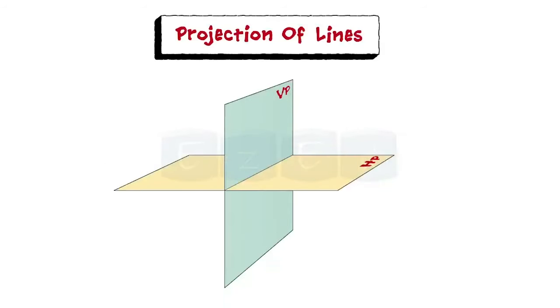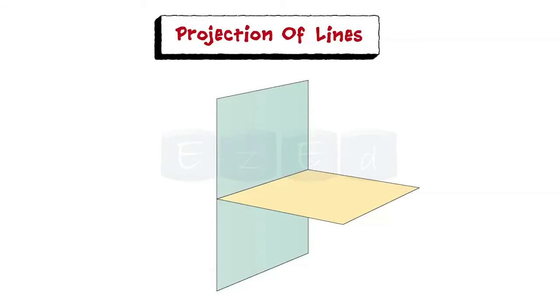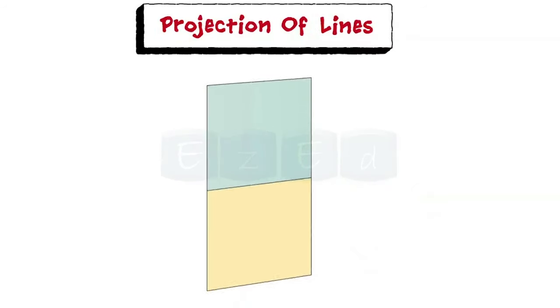Let us understand the term projection of a line. A line AB may be situated in space in any of the four quadrants. Consider line AB is situated in the first quadrant. The position is obtained by extending the projectors onto the planes. Now opening the horizontal plane, or rotating the plane in the clockwise direction, we get the following result.